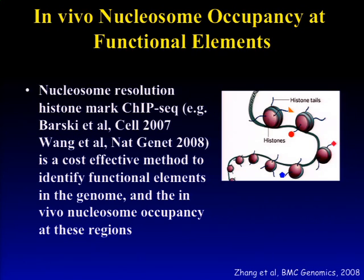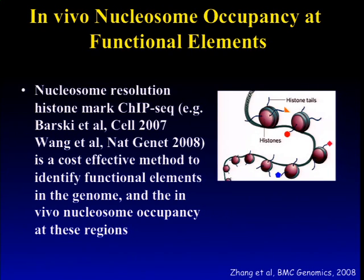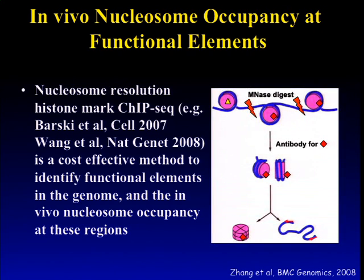In addition, histones have tails which can be epigenetically marked. Some marks attract transcription factor binding while others repel it. In the past, people have tried to do histone mark ChIP-seq at nucleosome resolution, where chromatin is digested with micrococcal nuclease to release mononucleosomes. Using an antibody to pull down specifically modified nucleosomes, one can then sequence the nucleosomal DNA that wraps around these histones.